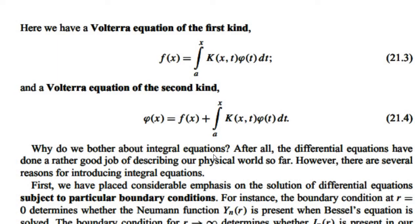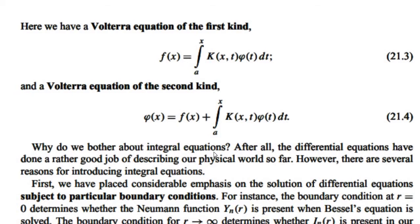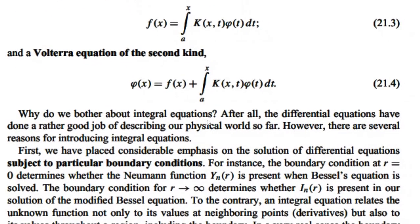In the first kind, the unknown function is only inside the integral sign. In the second kind, the unknown function appears both inside and outside the integral sign. If one of the limits of integration is a variable, then it is called a Volterra equation.